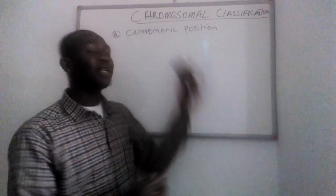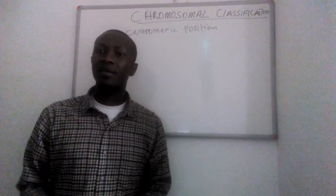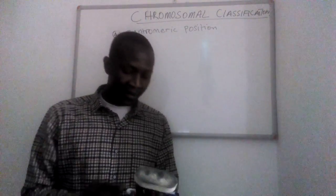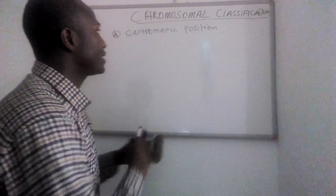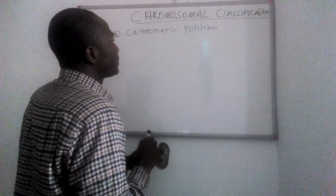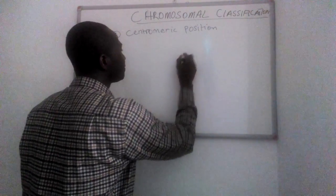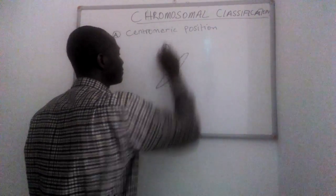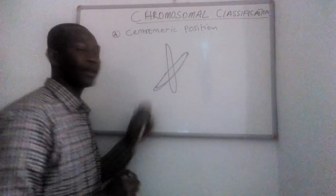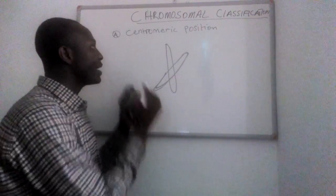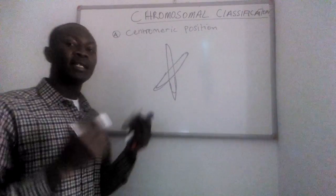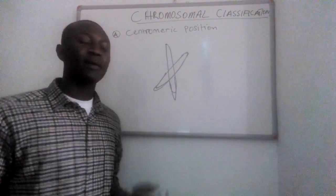To understand centromeric positions in chromosomal classification, we first need to know what a centromere is. In every chromosome we have what we call the short arm and the long arm.